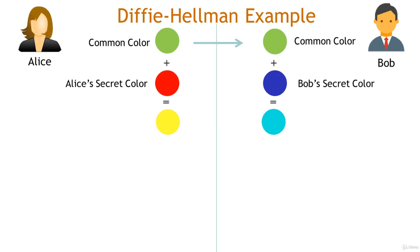Alice then sends a message to Bob and tells him that she got yellow as her result. And Bob tells Alice that he got cyan for his result. Alice and Bob now have two colors created by mixing the shared green color with their partner's secret color. They then mix their own secret color with their partner's shared color.